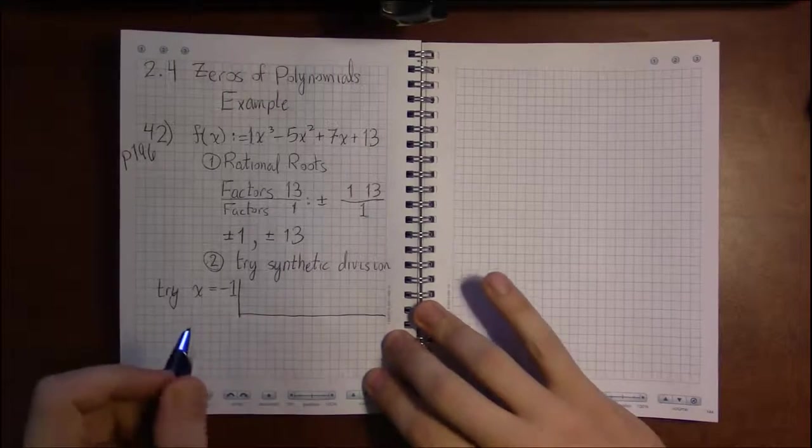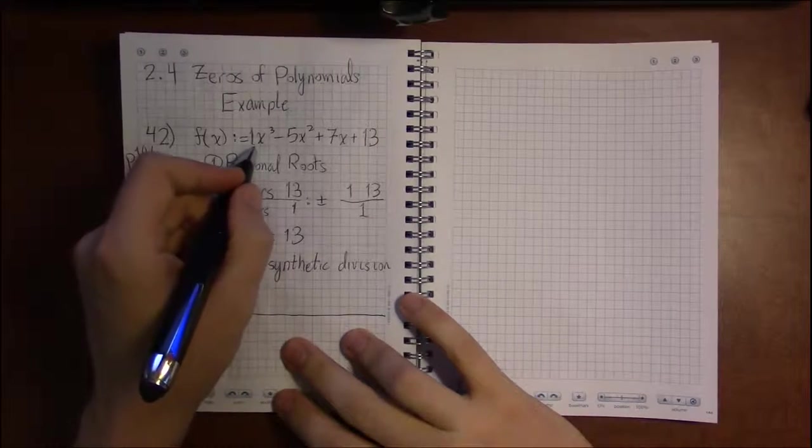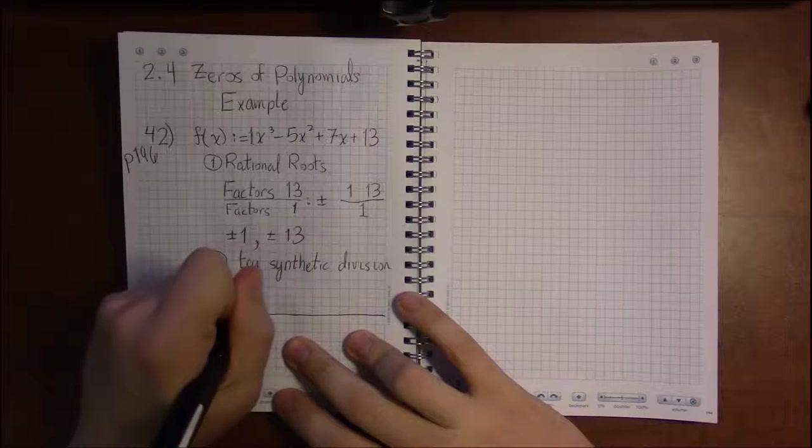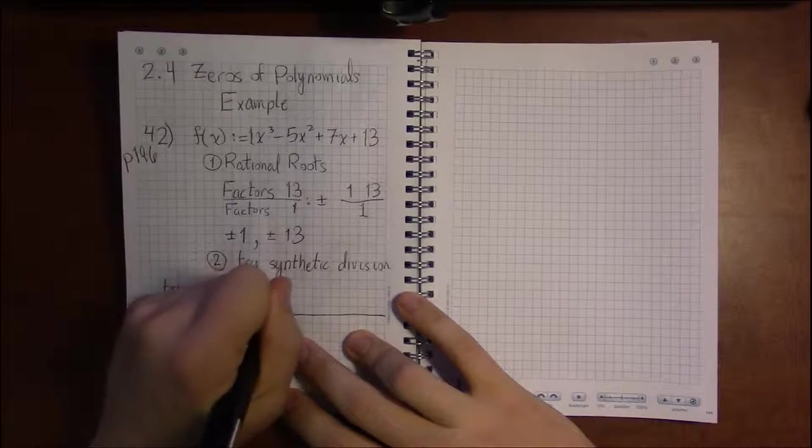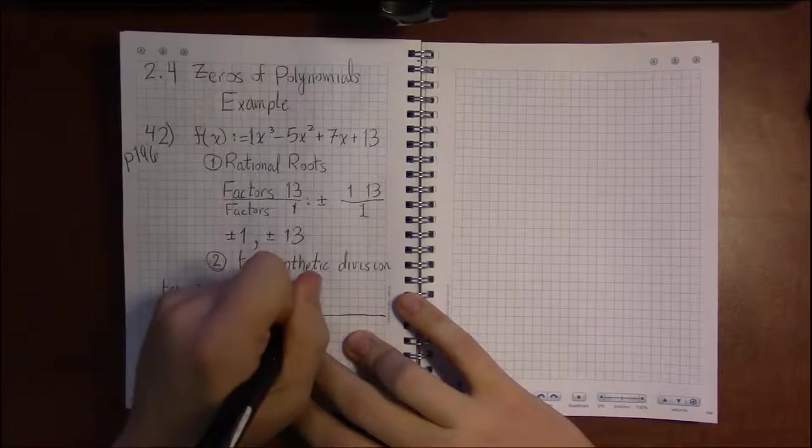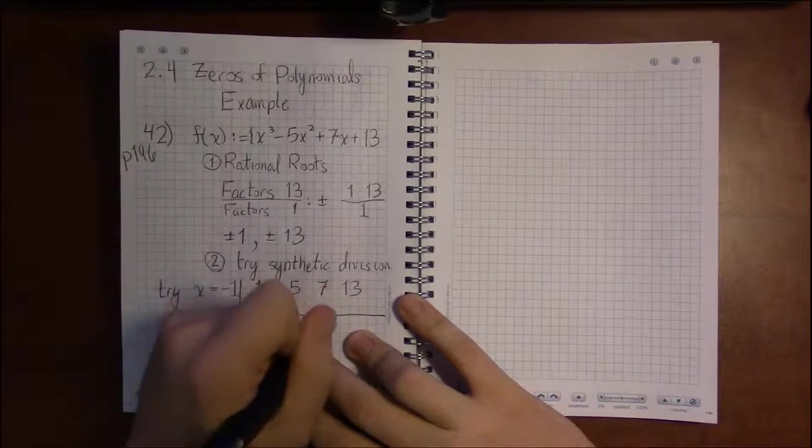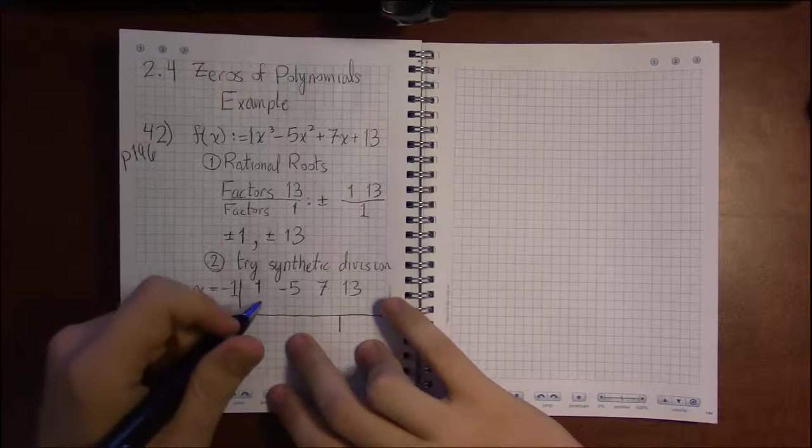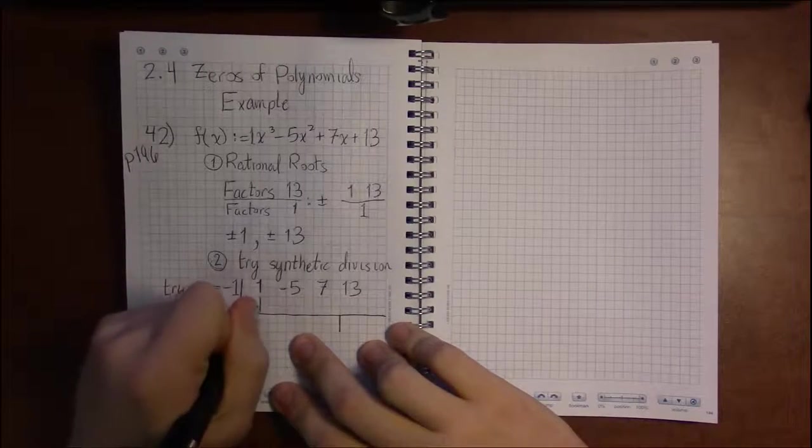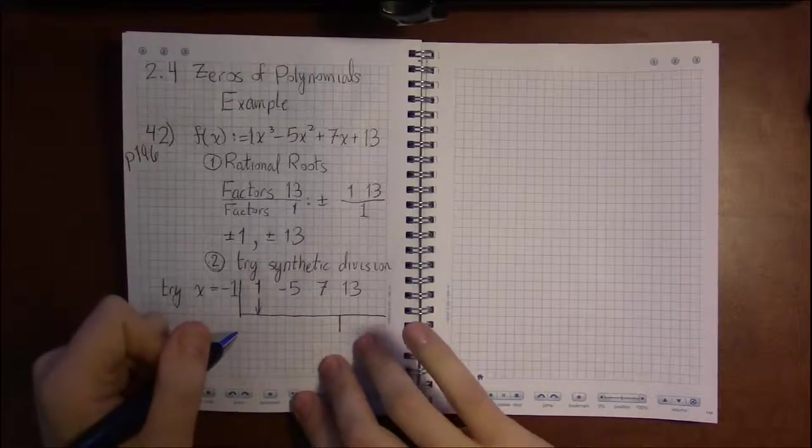I see that trying x equals minus 1 is going to be rather productive. I put minus 1 on the outside and write down the coefficients: 1x cubed minus 5x squared plus 7x plus 13. And go through with synthetic division, hoping to get a 0 as a remainder.